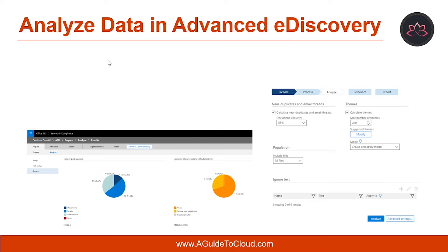Let's understand how you can analyze data in eDiscovery. When the number of collected documents is large, it can be difficult to review them all. Advanced eDiscovery provides a number of tools to analyze the documents, reduce the volume to be reviewed without any loss of information, and help you organize the documents in a coherent manner. Some of these capabilities include near-duplicate detection, email threading, and themes.